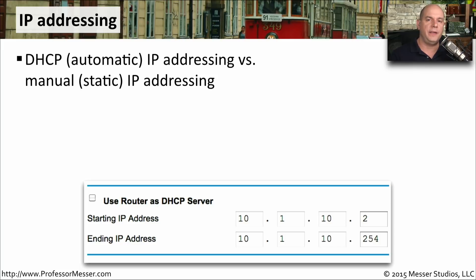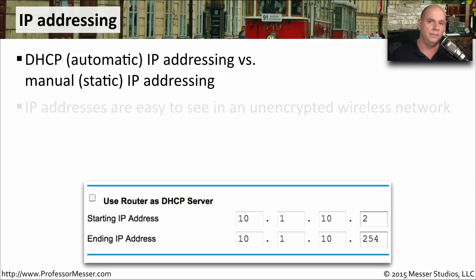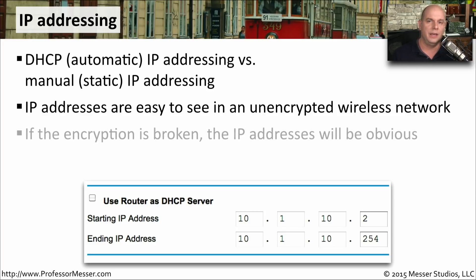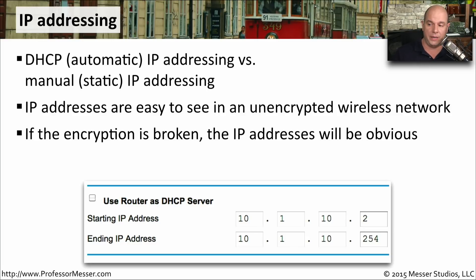On your wireless router, you can configure exactly the way that IP addressing is handled on your network. Most people configure DHCP, or Dynamic Host Configuration Protocol, which is a way to automatically assign IP addresses, subnet masks, default gateways, and any other IP configuration settings across all of the devices on your network. Of course, you don't have to use DHCP — if you wanted to manually or statically assign IP addresses on every single device, you could certainly do that. There's usually no security issue associated with setting things automatically with DHCP or manually with static IP addressing. If the network is unencrypted, you can see everything including IP addresses, or if someone knows the passphrase, they'll be able to see IP addresses there as well.